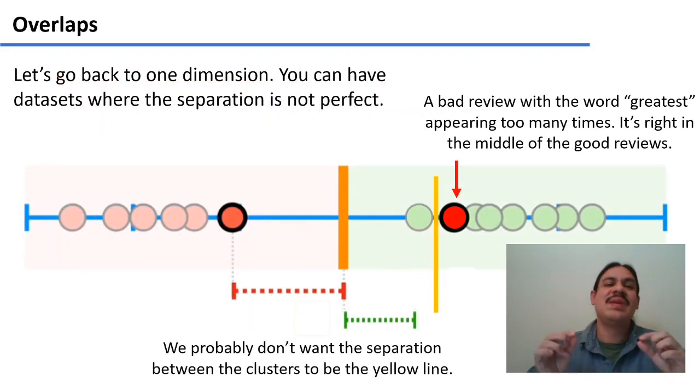Let's start with overlaps. Let's go to our one-dimensional example. As you can remember, this one-dimension is just the amount, the number of times we see the word greatest in a document. It's just a one-feature description, a one-dimensional description of a document. The red dots are the bad reviews. And there, the word greatest appears zero times, one time, two times, and so forth. The green dots are the good reviews. And they have the word greatest eight times, nine times, ten times, for example.